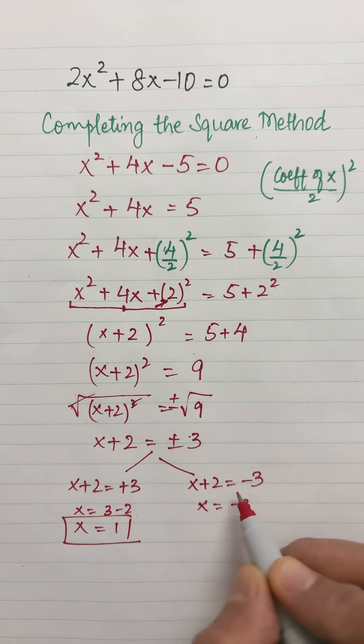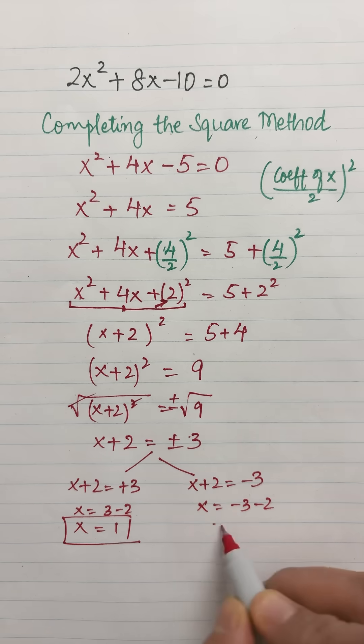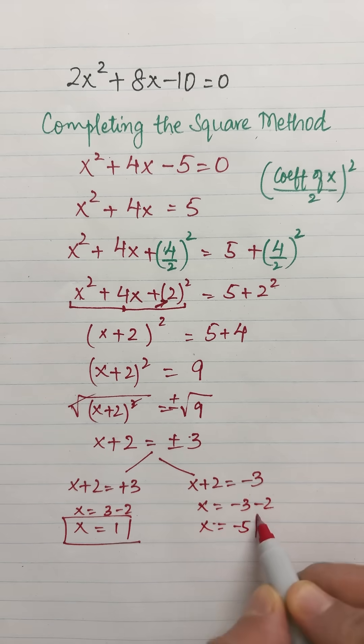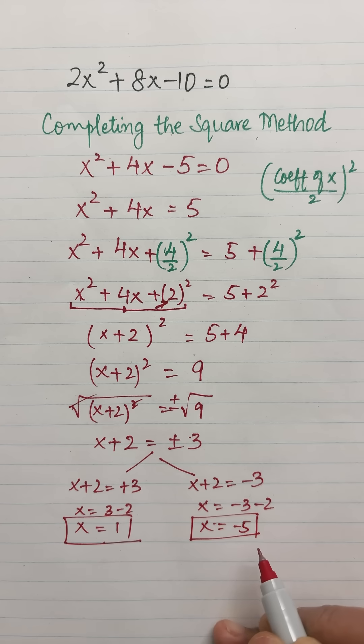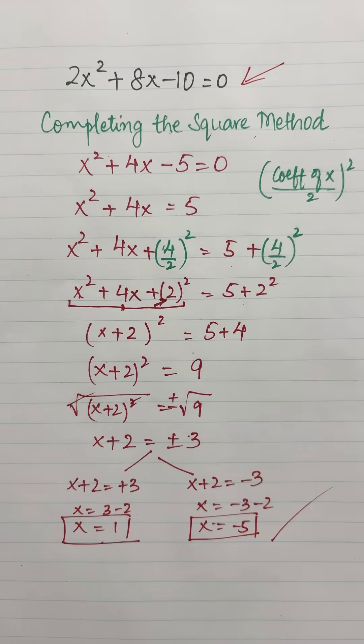And over here, this plus 2 shifted to that side becomes minus 2. So x = -5. So x = 1 and x = -5 are my two solutions of this quadratic equation. That's it.